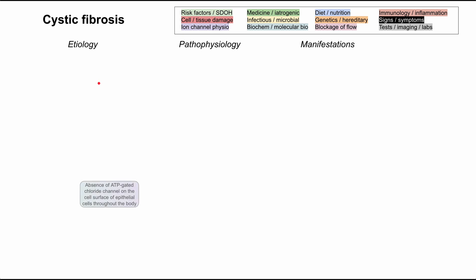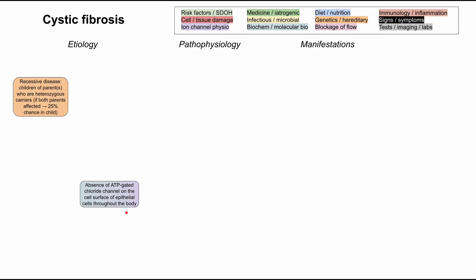At the center of the etiology for cystic fibrosis is an ATP-gated chloride channel, and we'll see how a deficit in the production of this channel can lead to manifestations throughout the body. Cystic fibrosis is a genetic disorder — it's hereditary and it's a recessive disease. This means you're predisposed to having it if your parents are heterozygous carriers for cystic fibrosis.